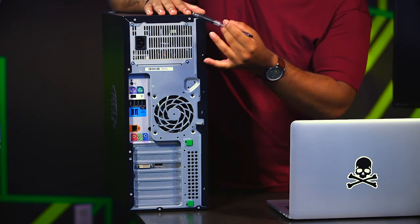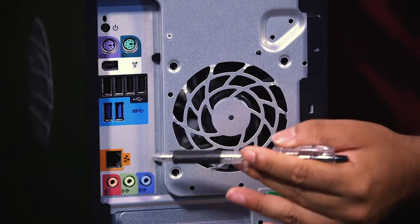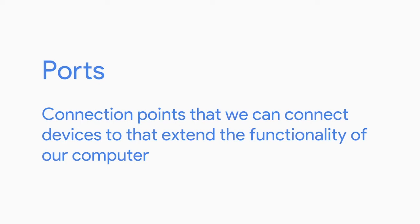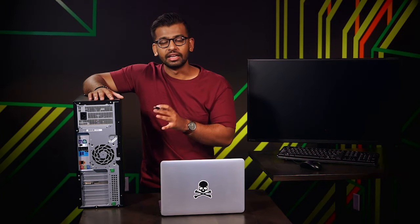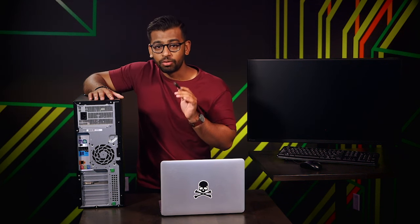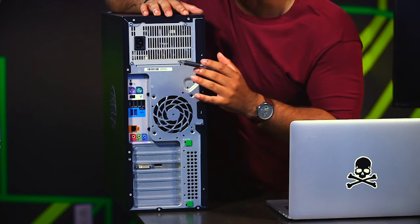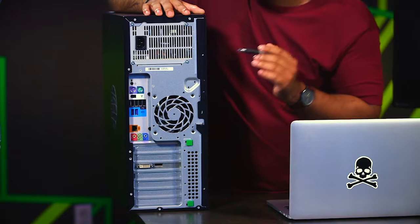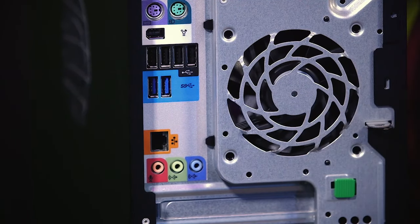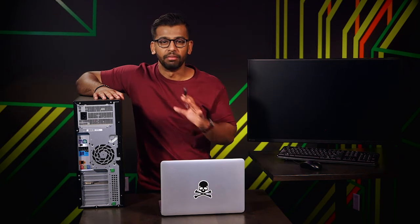Let's take a look at the back of the computer. You can see common connectors here — the power outlet and the common ports. Ports are connection points that we can connect devices to that extend the functionality of our computer. We'll go into detail about the ports in a later lesson. But here's a quick rundown: we have a port to connect to a monitor, a few ports to plug your keyboard and mouse, and another important one for our network connection.